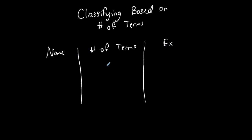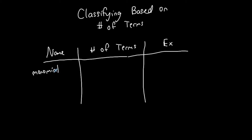The first type is called a monomial. A monomial has one term. For example, 2x is a monomial — it's a term by itself and the exponent on x is a whole number. Another monomial is 3x squared. There's no plus or minus in the middle, so it's not two terms — it's a single term monomial.